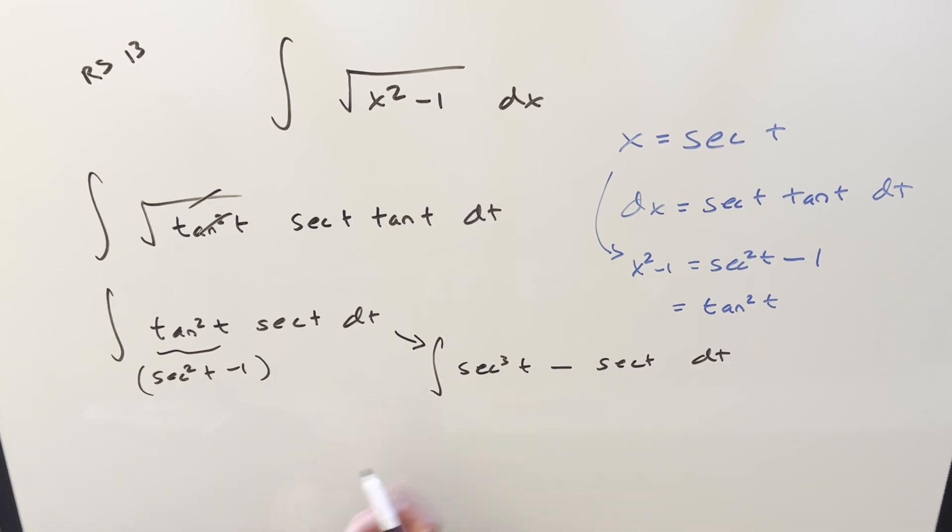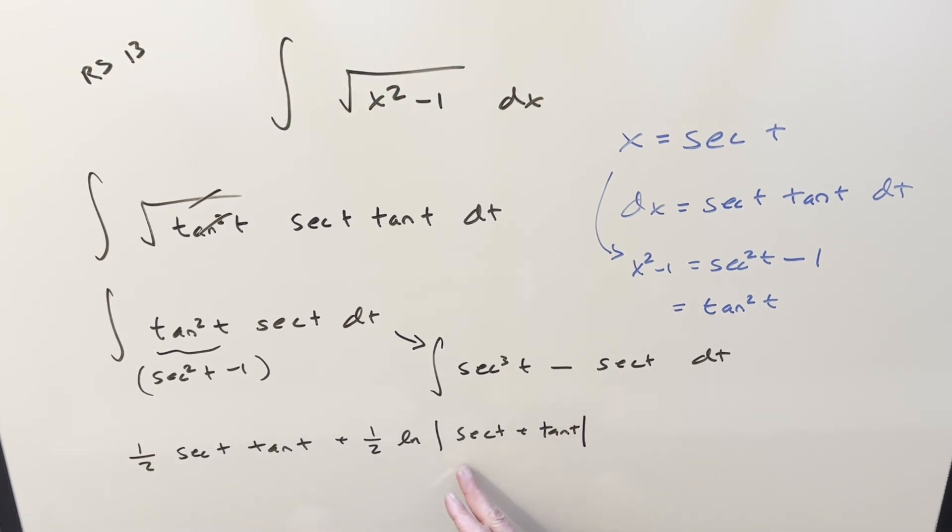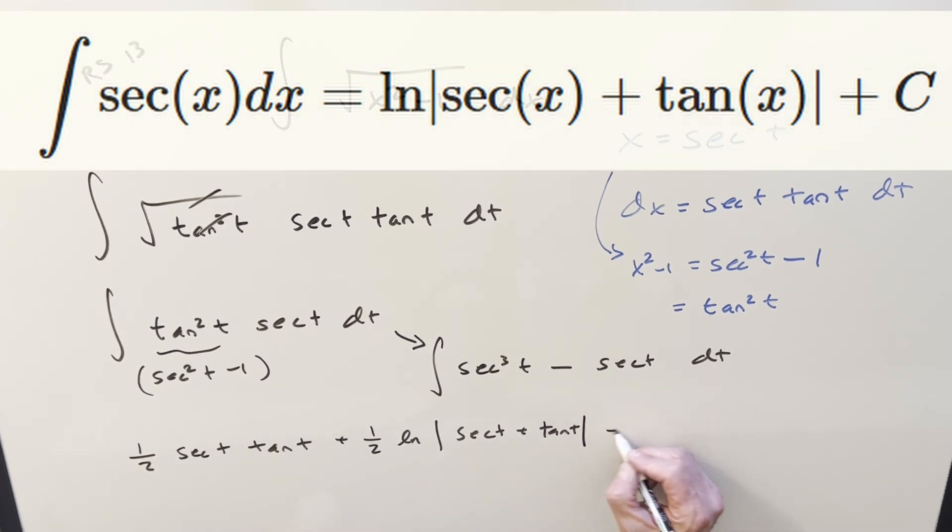But then for each of these, I'm just going to use the formula. What's going to happen is this first one is going to be half secant t tan t, and then plus 1 half natural log absolute value secant t plus tan t.